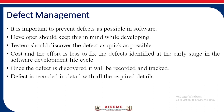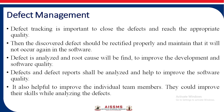When a defect is discovered, it is recorded with all its required details. Defect tracking is important to close the defect and reach the appropriate quality. The discovered defect should be corrected and maintained so that it does not occur again in the software. The defect is analyzed and the root cause is found to improve the development and the quality of the software. The defects and the defect reports are analyzed, which helps to improve the quality of the software.